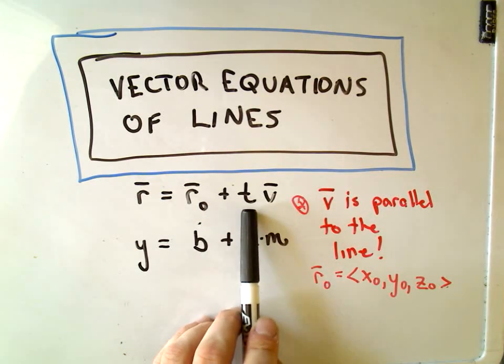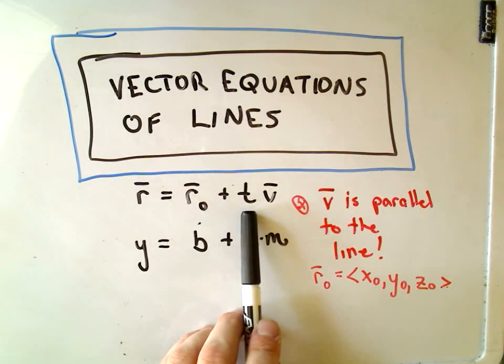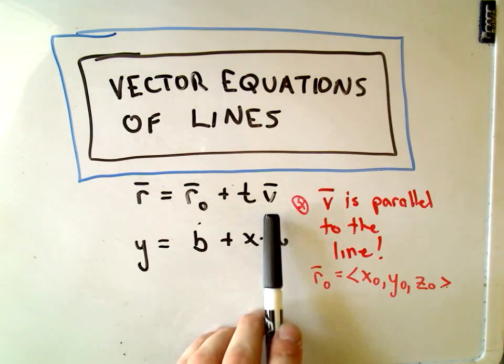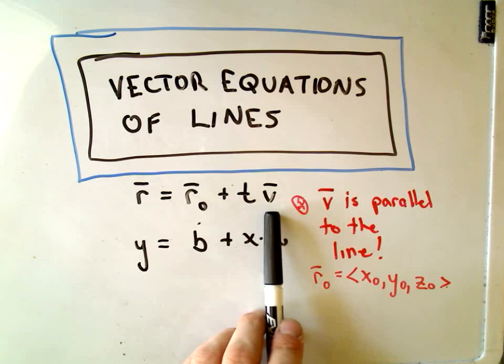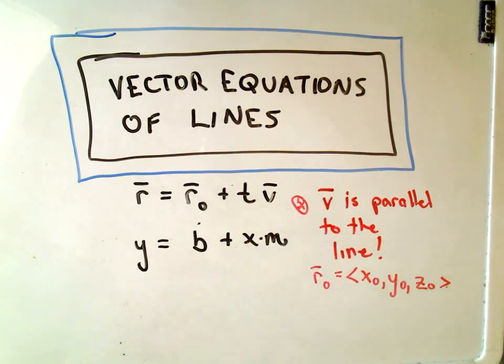Okay, so t is our variable—we usually use t when we use variables for vectors. So instead of our variable x we have our variable t. m represents the slope of the line. In three dimensions we don't talk about slopes, but this vector v is parallel to the line. So just like m tells you the direction of the line, the slope tells you which way you're going. This v that's parallel to the line is also going to specify the direction that the line's going.